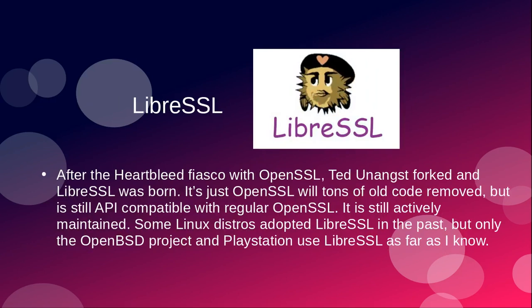LibreSSL. After the Heartbleed fiasco with OpenSSL, Ted Unangst forked it and LibreSSL was born. It's just regular OpenSSL but with tons of code removed — a lot of stuff was taken out — but it's still API compatible with regular OpenSSL and is still actively maintained. Some Linux distros adopted LibreSSL in the past, but as far as I know, only the OpenBSD project and PlayStation currently use LibreSSL in their operating system.